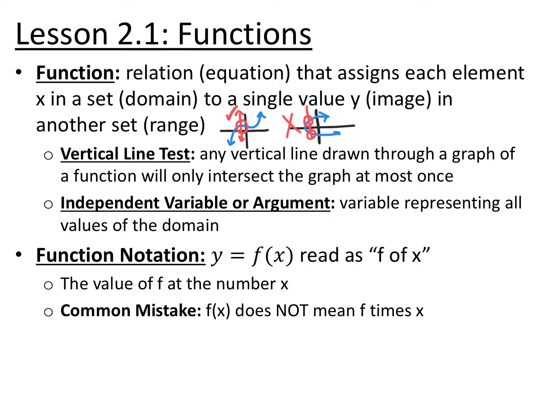The independent variable, which is sometimes called the argument, is the variable that represents all the values in the domain. Often we use x, but it doesn't have to be. Function notation is written as y equals f of x. We call this f of x — it's not f times x. It means the value of f at any number x, and you can use any variables; it doesn't have to be f, x, and y.